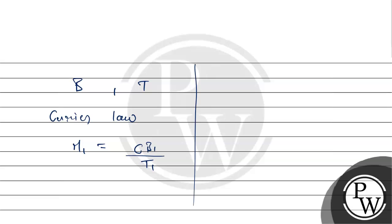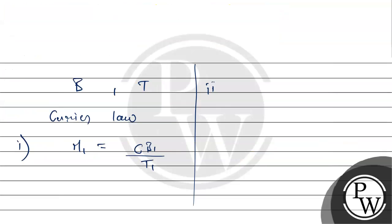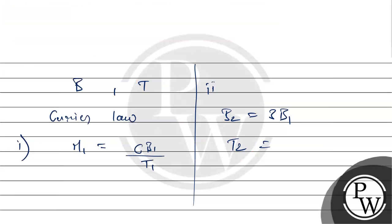And in second case, the external magnetic field is tripled and temperature is quadrupled. It means B2 = 3B1 and T2 = 4T1, temperature is quadrupled. So it will be M2 = CB2/T2.